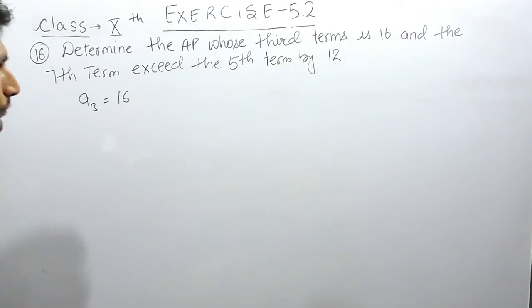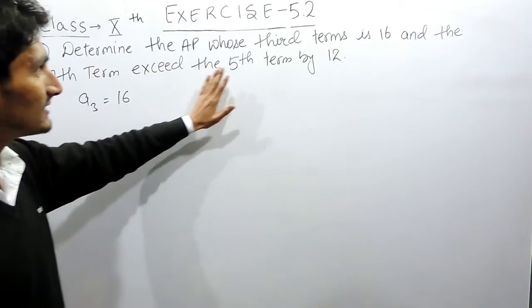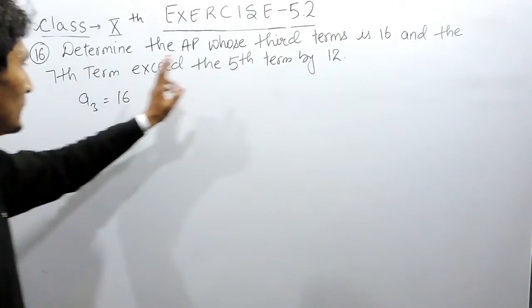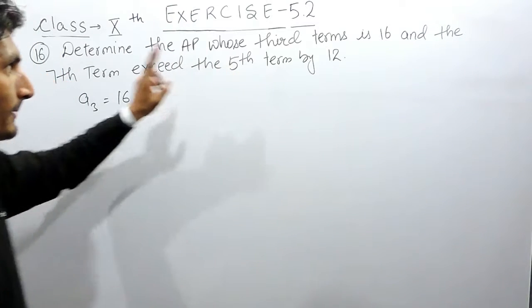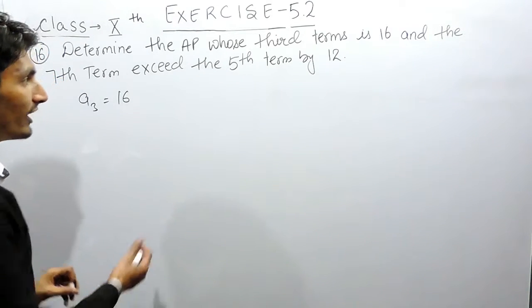It is also given that the seventh term of this same AP exceeds the fifth term of this same AP by 12, meaning the seventh term will be 12 more. In other words, we can say that the difference between the seventh term and the fifth term will be 12.